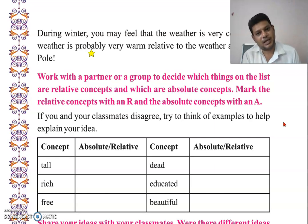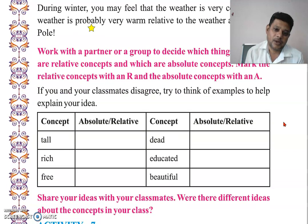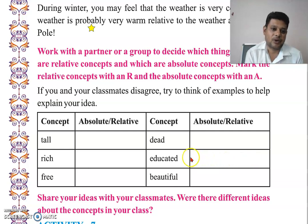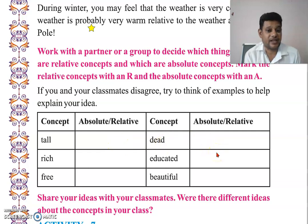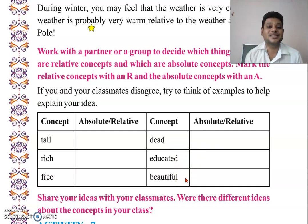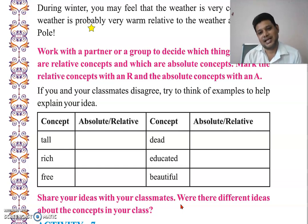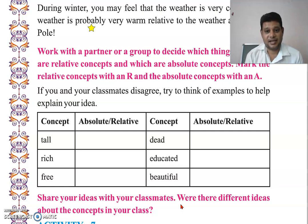These exercises are in your homework — you need to do homework and then share it with your classmates. We have a list of concepts — absolute and relative. The concepts are: tall, rich, free, date, educated, beautiful. For each one, you need to decide whether it is an absolute concept or a relative concept — write it yourself, try it yourself, and then share it with your classmate to understand the difference between your answer and your classmate's answer.